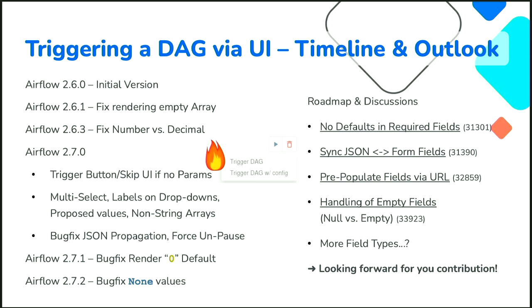In 2.7 we implemented auto-guidance: whenever parameters are defined, the form is shown; if no parameters exist, the DAG is triggered without the form — of course there's nothing to ask. That generated some discussion, so there's now a configuration parameter to re-enable the legacy pop-up if preferred. Also in 2.7, multi-select boxes and non-string arrays were added. In 2.7.1 there was a bug fix, and the upcoming 2.7.2 will fix an inconsistency between empty strings and null values.